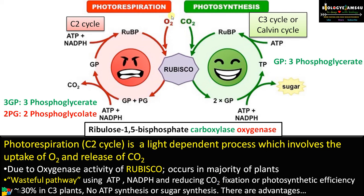In photorespiration, oxygen combines with RuBP in the presence of Rubisco forming 3-phosphoglycerate and 2-phosphoglycolate. To regenerate this 2-phosphoglycolate back to RuBP, ATP and NADPH are utilized and carbon dioxide is released, thereby reducing carbon fixation and photosynthetic efficiency. This occurs in the majority of plants. C4 plants have another adaptation to overcome photorespiration.